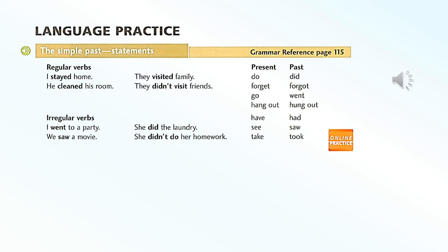Page 78, Language Practice. The simple past — statements. Regular verbs: I stayed home. He cleaned his room. They visited family. They didn't visit friends. Irregular verbs: I went to a party. We saw a movie. She did the laundry. She didn't do her homework. Present and past forms: do/did, forget/forgot, go/went, hang out/hung out, have/had, see/saw, take/took.